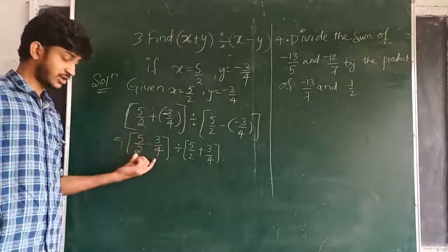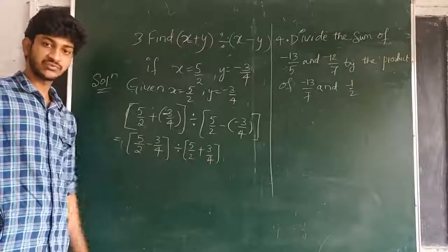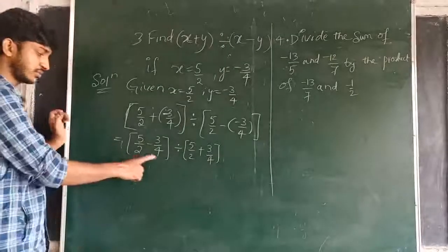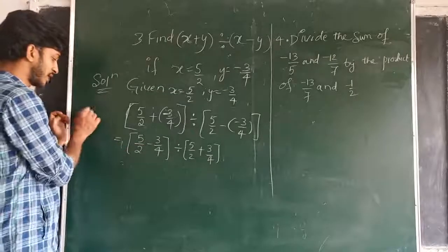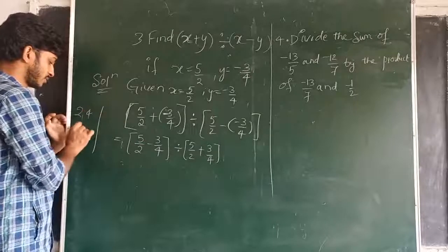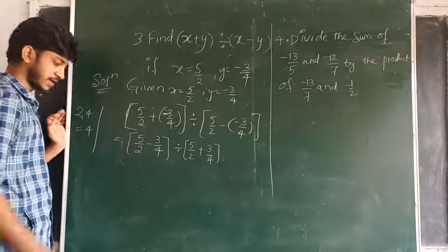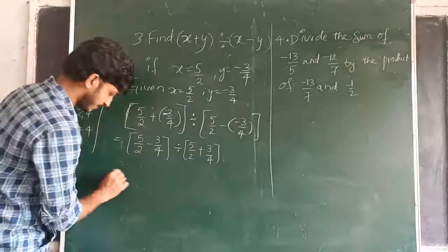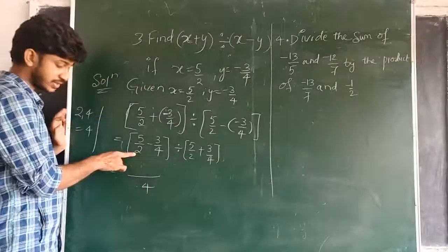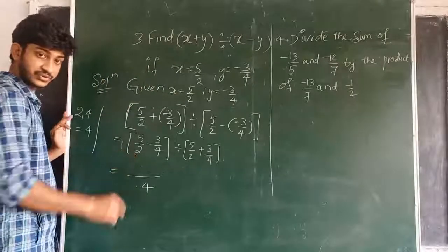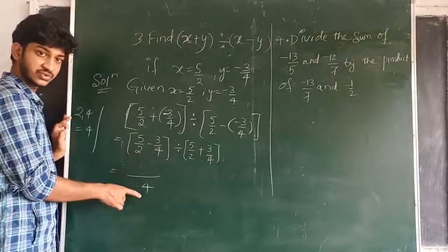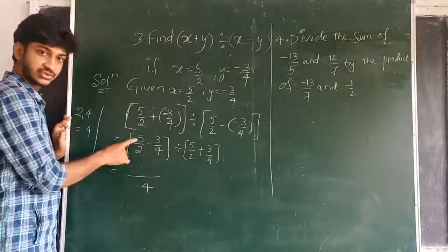If you observe here, the denominators are 2 and 4 in both numerator and denominator. So we can take the LCM of 2 and 4. LCM of 2 and 4 is 4. Simply take 4 as the LCM. For denominator 2, we take 2 times 2 into 5.